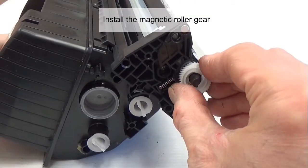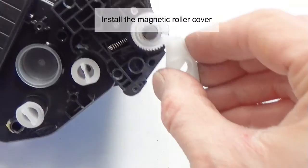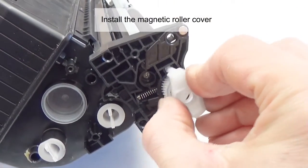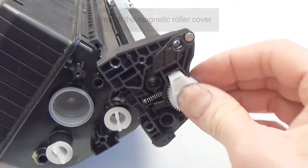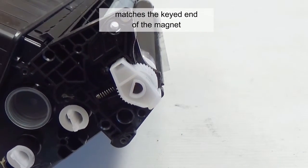Install the magnetic roller gear. Install the magnetic roller cover. Make sure that the keyhole in the cover matches the key end of the magnet in the magnetic roller.